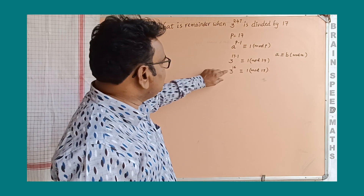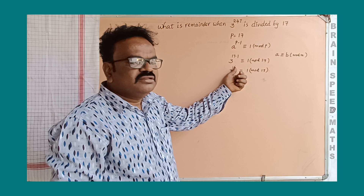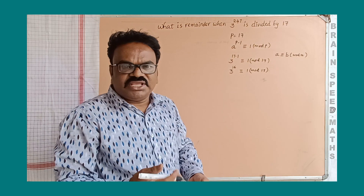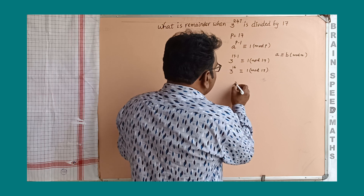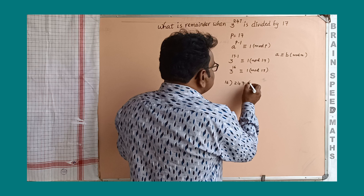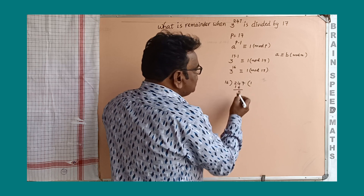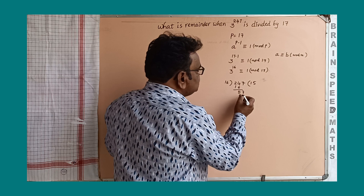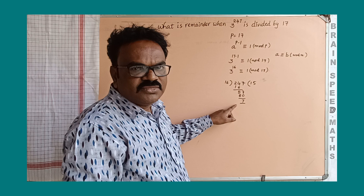But here the power is 247, while from the theorem the power is only 16. So how many times can we raise it? We need to find out. So I am dividing 247 by 16. 16 goes 15 times into 240, and the remainder is 7. So 247 = 15 × 16 + 7, with remainder 7.